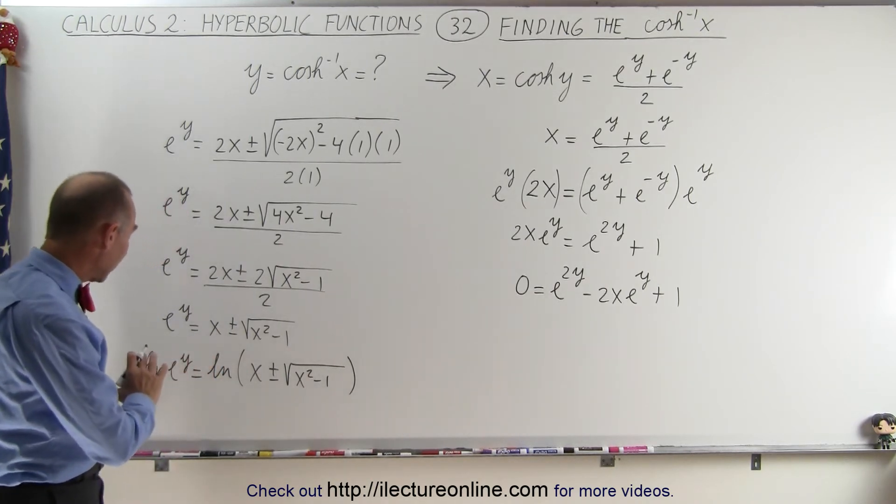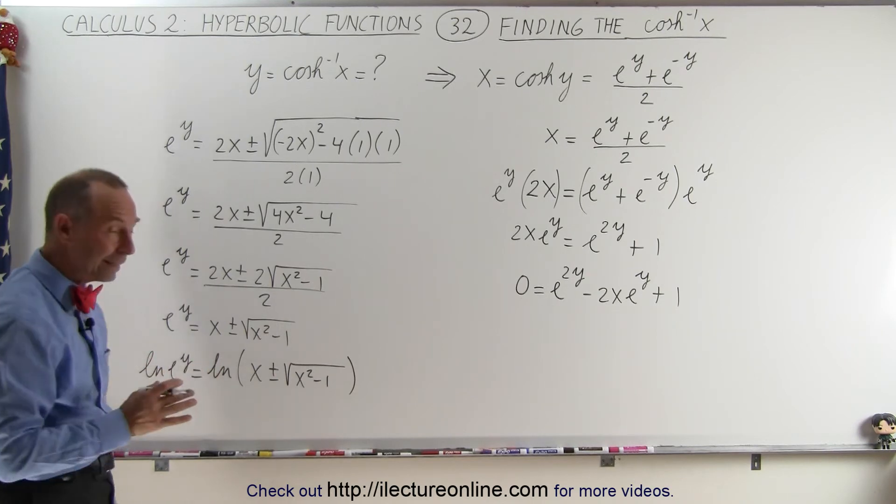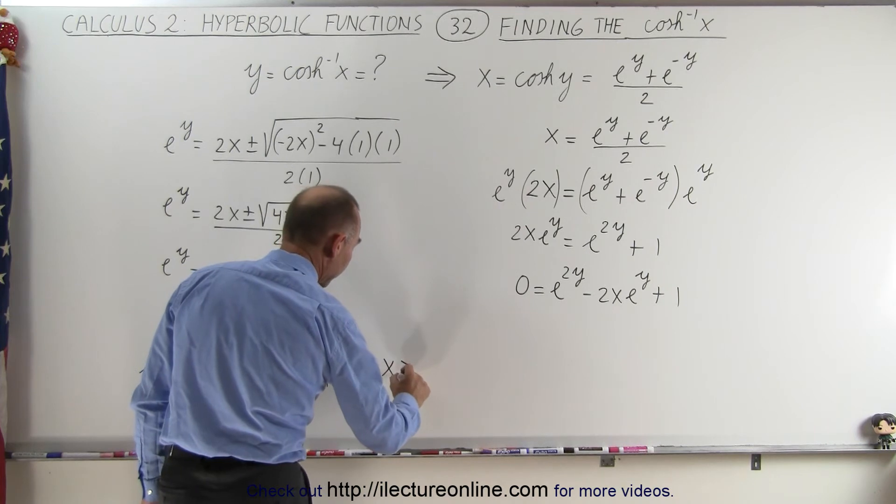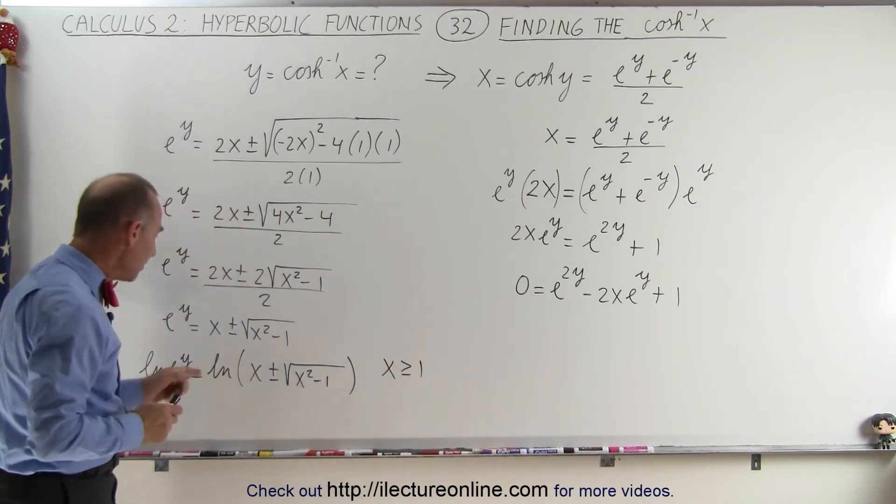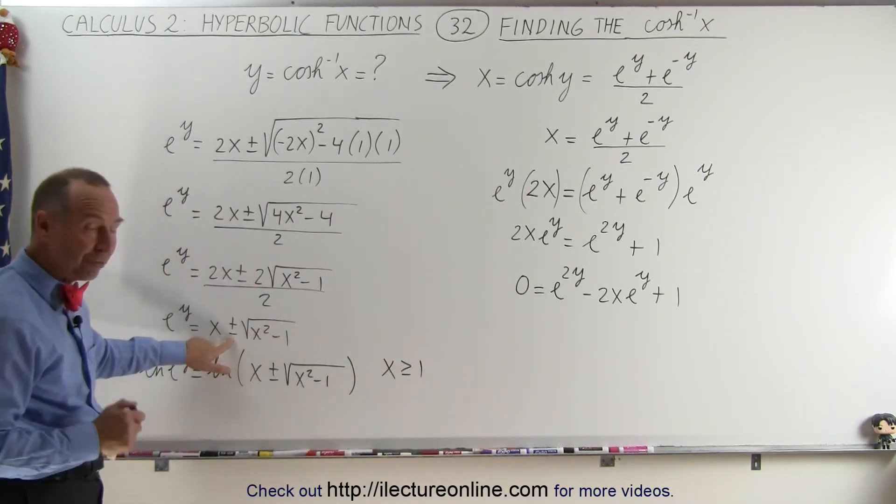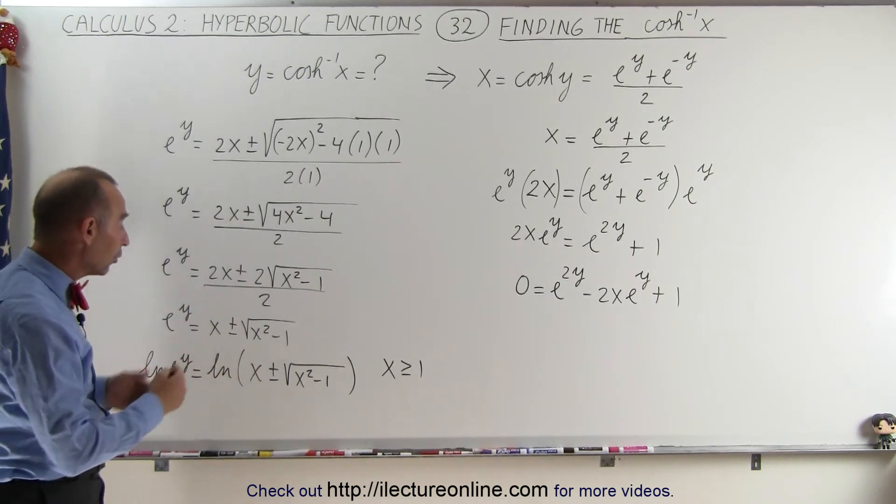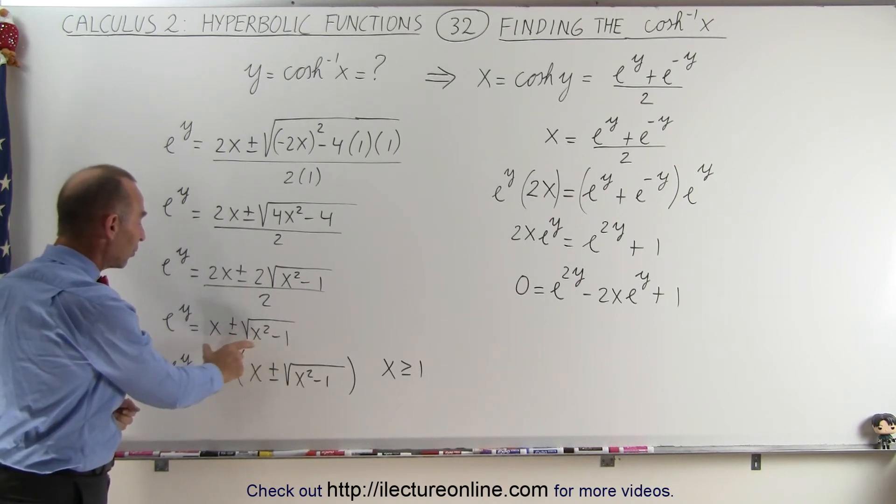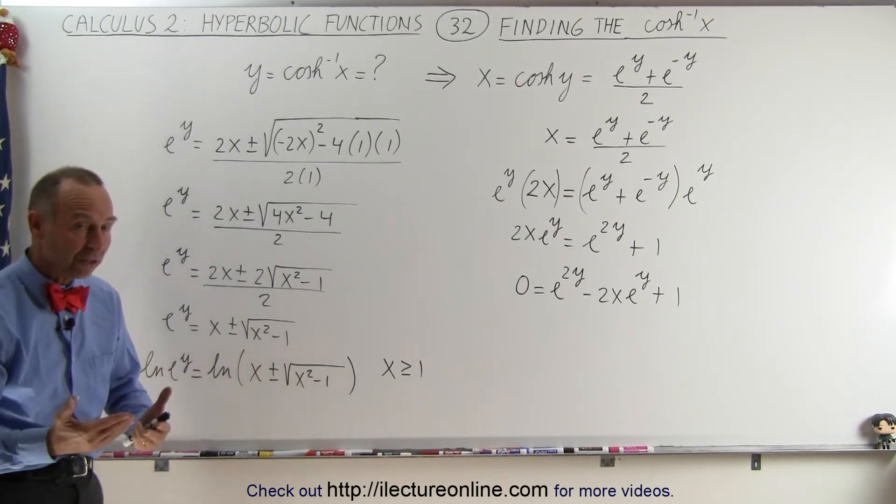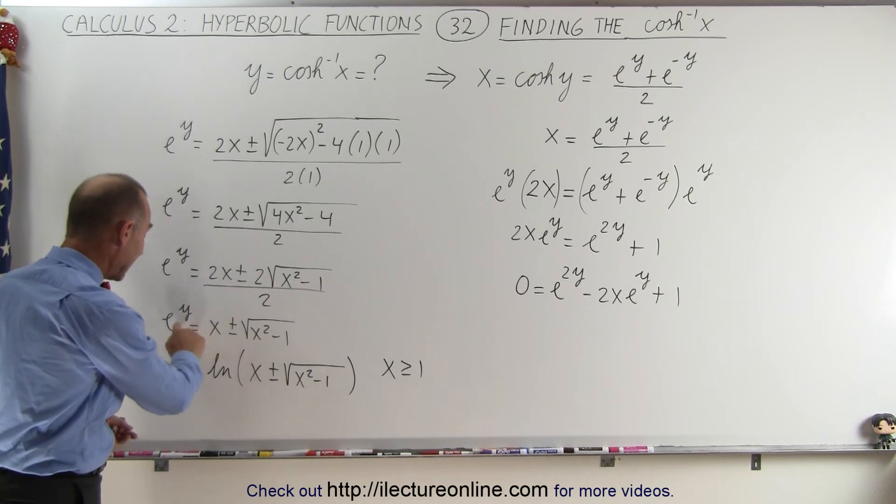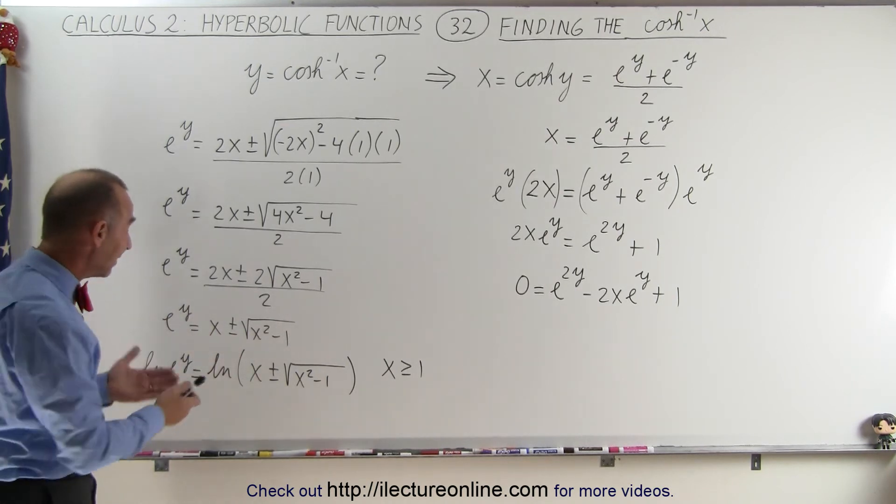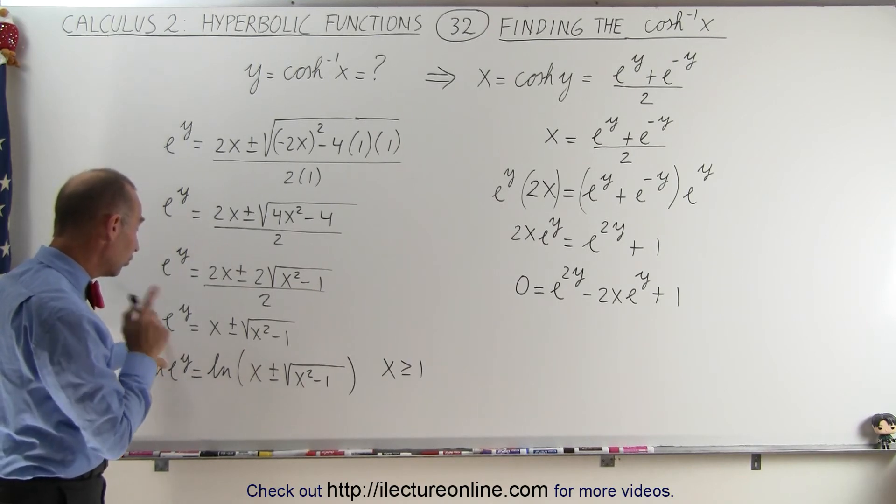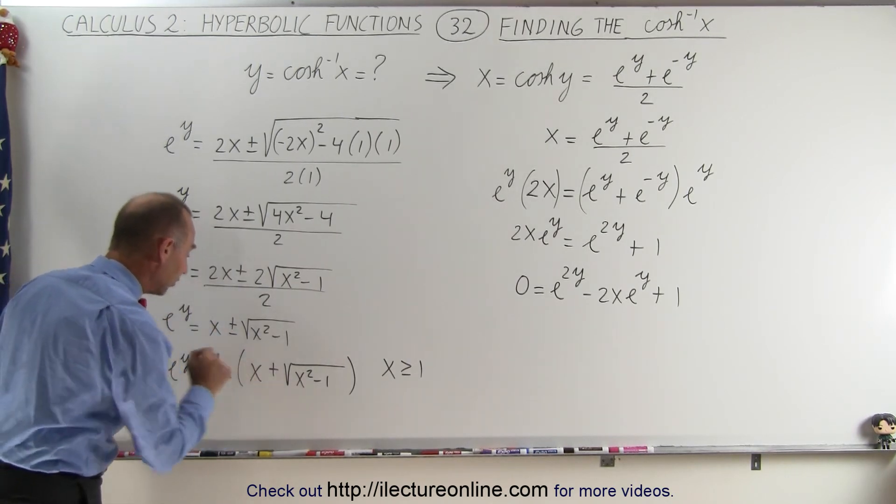First of all, we know that when it comes to the hyperbolic cosine, that x must be greater than or equal to 1. Secondly, if we allow the negative and you let x become a large number, the minus 1 becomes insignificant, and then basically you have x minus x, which goes to 0. So for large values of x, if we allow the negative sign, e to the y would go to 0, which really doesn't make any sense, because we expect to see an exponential function. So therefore, the negative is not a possible answer.